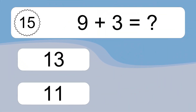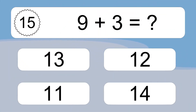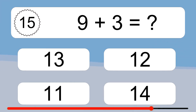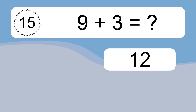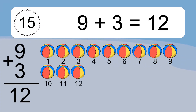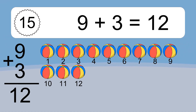9 plus 3 equals what? 9 plus 3 equals 12. Let's count it: 1, 2, 3, 4, 5, 6, 7, 8, 9, 10, 11, 12.